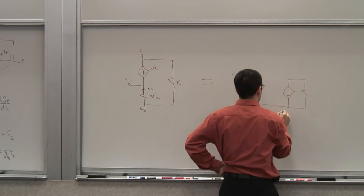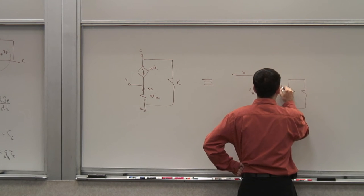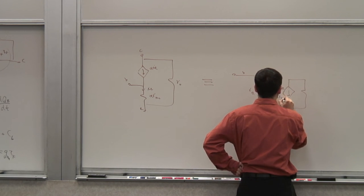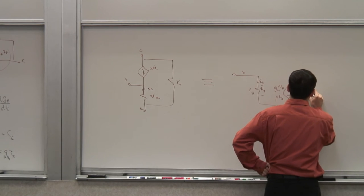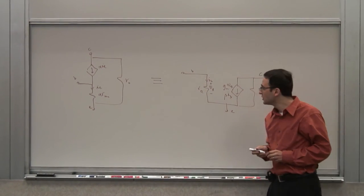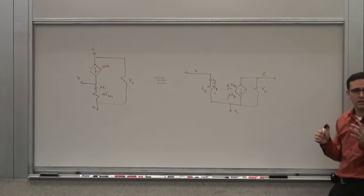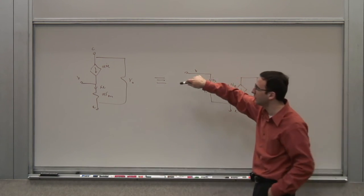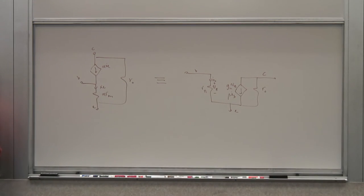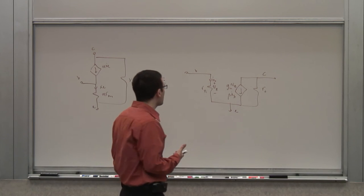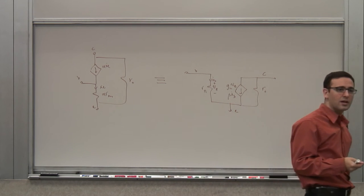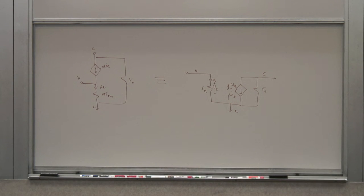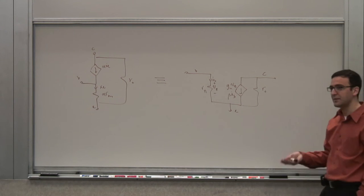There's an exact equivalent model — the hybrid-pi model — with R_pi from base to emitter, a current source gm·V_pi or equivalently beta·IB, RO from collector to emitter, and V_pi across R_pi. These two models are exactly equivalent. There's also a pi-ed version of the T-model in the Ebers-Moll framework. If we are going to linearize our result at the end, we might as well linearize the device from the beginning, making our lives much easier dealing with a linearized device. That's what we've done for a fair amount of this course.